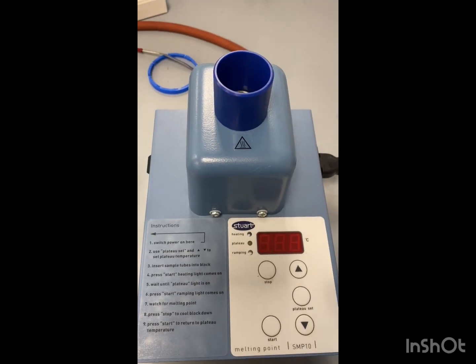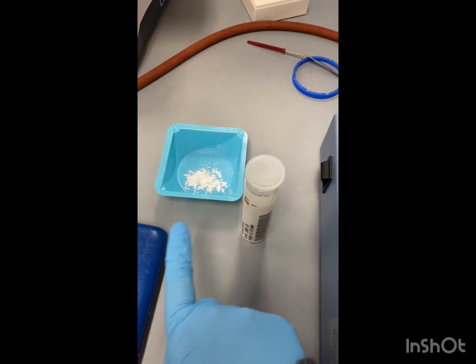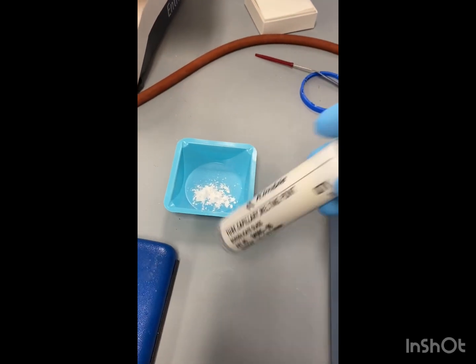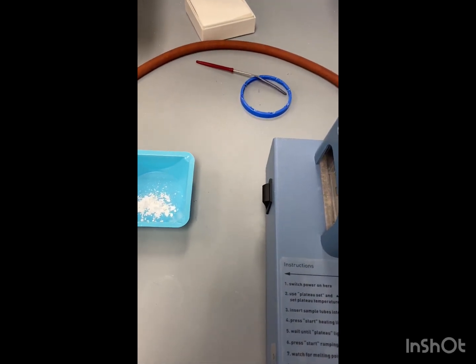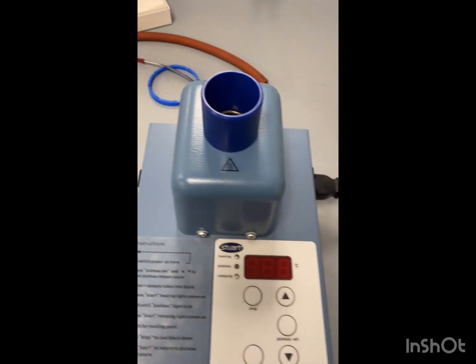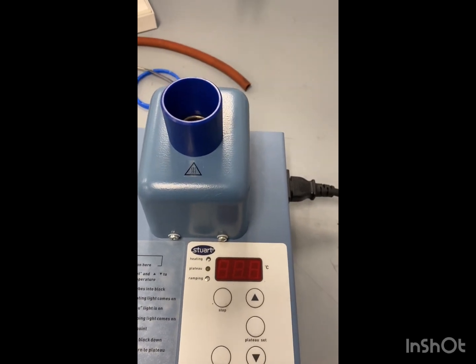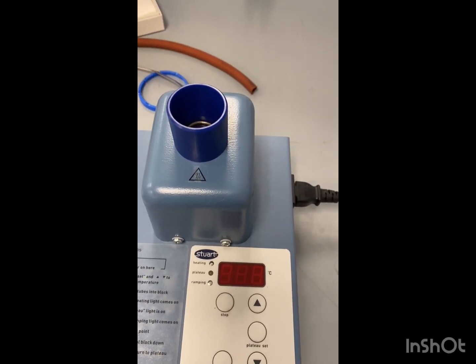All right, so here's our melting point apparatus. Here's our solid and here are some melting point capillary tubes. So we're going to get our product in the tube and then we're going to get a melting point range on our solid.